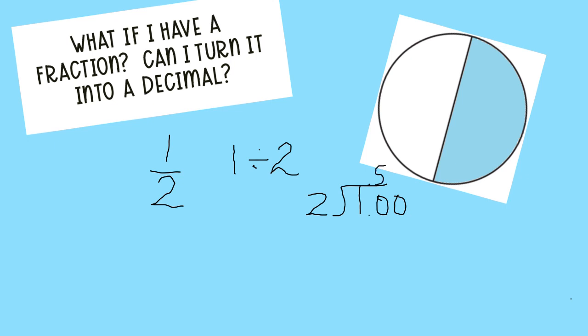So I'm going to multiply five times two is ten. Subtract, bring down the zero. Hmm, two into zero is zero. Multiply, subtract, bring, nope, nothing to bring down. There you have it.